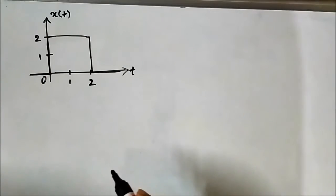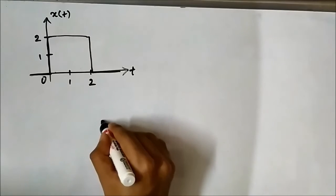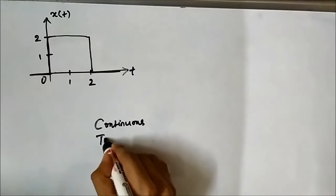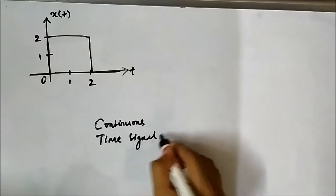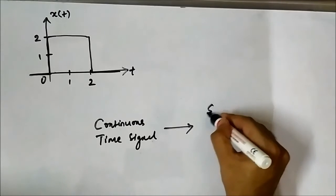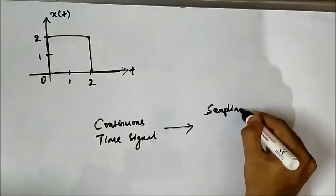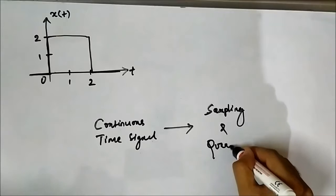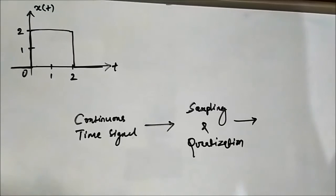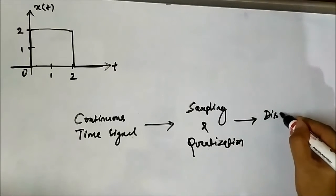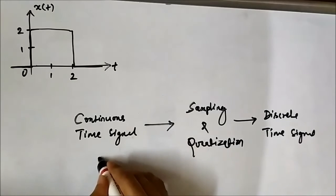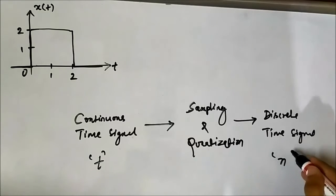This is the continuous time domain signal. We know that a continuous time domain signal can be converted into a discrete time signal through the process of sampling and quantization. I have already posted a video related to that — you can check that out. This gives us the discrete time signal.